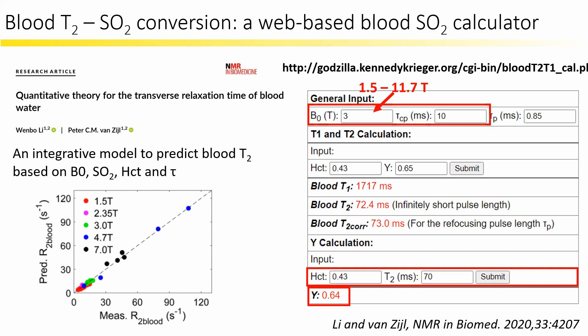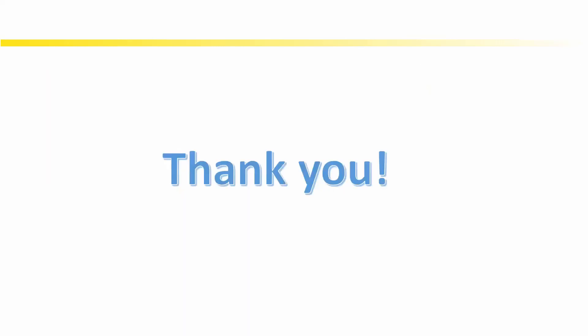In conclusion, global T2 oximetry, especially TRUST, is robust, well-validated, and has wide application. T2 oximetry mapping is still underdeveloped and limited by signal-to-noise ratio, but this technique is promising and will be valuable for local oxygen investigation. Thank you for your attention.